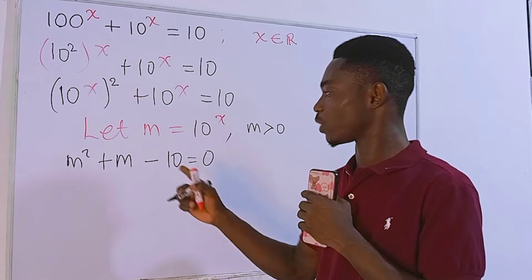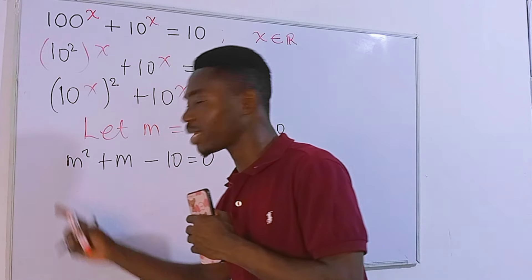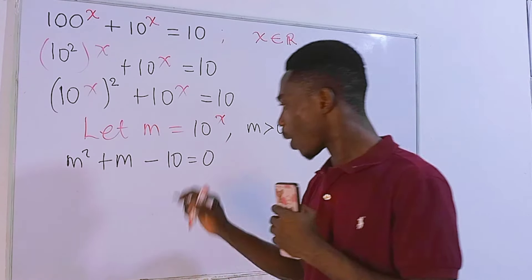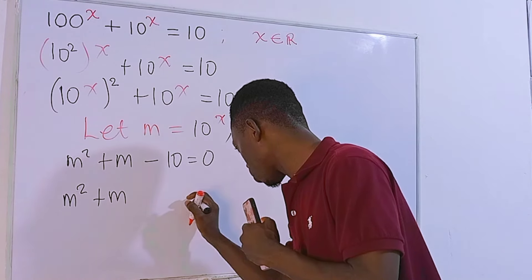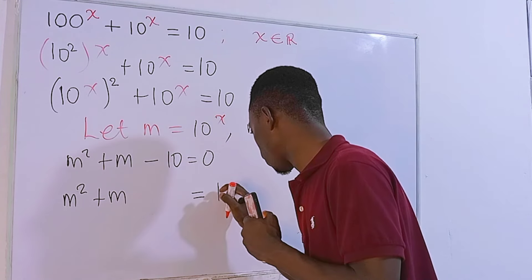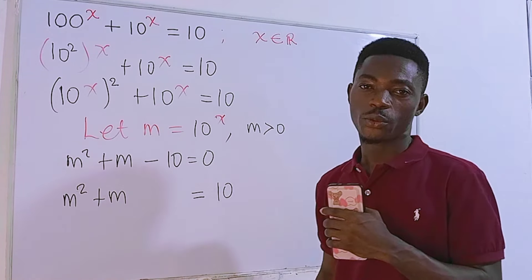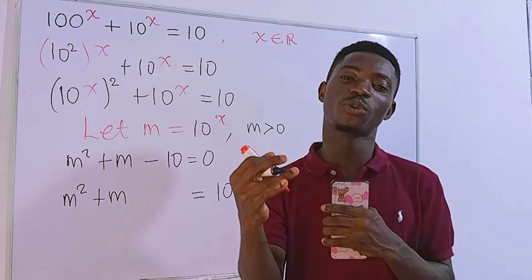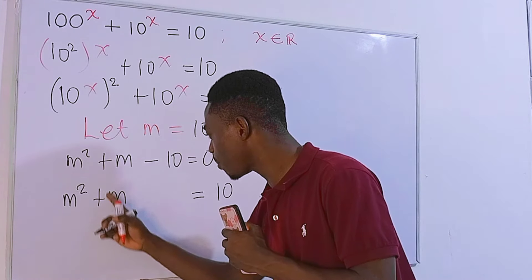To complete the square, first make sure the coefficient of m squared is 1 — it already is, so we're fine. We write m squared plus m, leaving a space, equal to 10 after transposing the negative 10. We'll add a magic number to the left side to make it a perfect square.